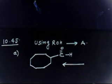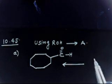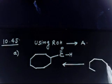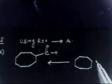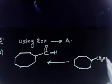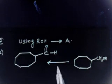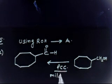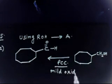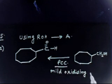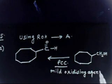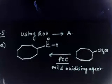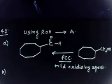For part A, you can do oxidation using PCC — pyridinium chlorochromate. If you take a primary alcohol with a CH₂OH group and use PCC, it will stop at the aldehyde stage because pyridinium chlorochromate is a mild oxidizing agent. So using PCC you will get the desired aldehyde product.